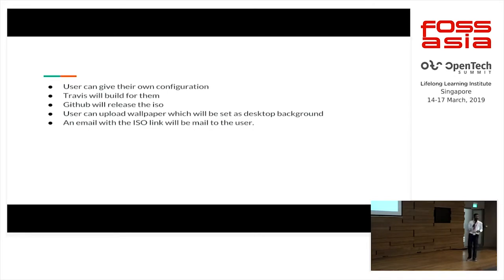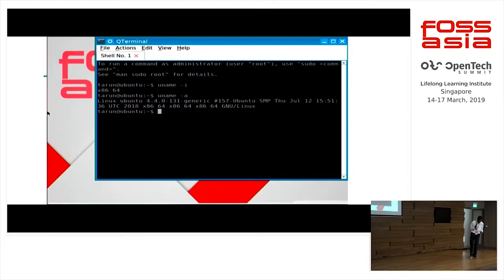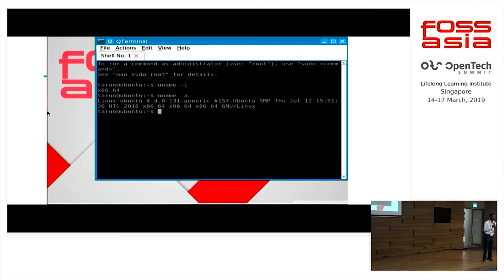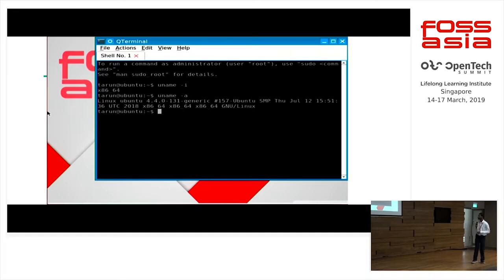Malix Generator gives us the power to customize the OS. In those 10 minutes, Malix Generator triggers the Malix repository and Travis builds and deploys it on GitHub. We use SendGrid to send the ISO link. Users can upload wallpapers, set up packages, and customize the OS, and the ISO will be mailed to the user. One important milestone from the last GSoC was converting the system to 64-bit, as most machines today require a 64-bit OS.